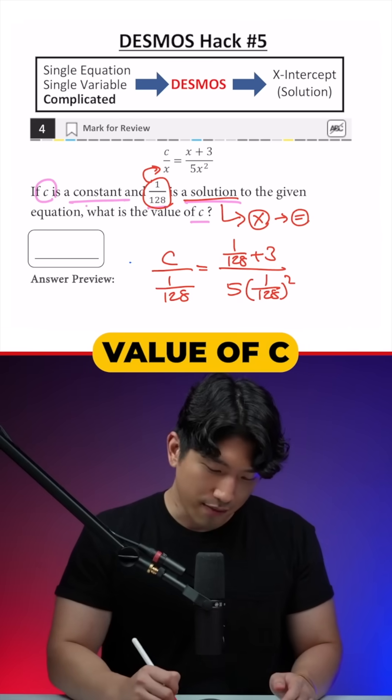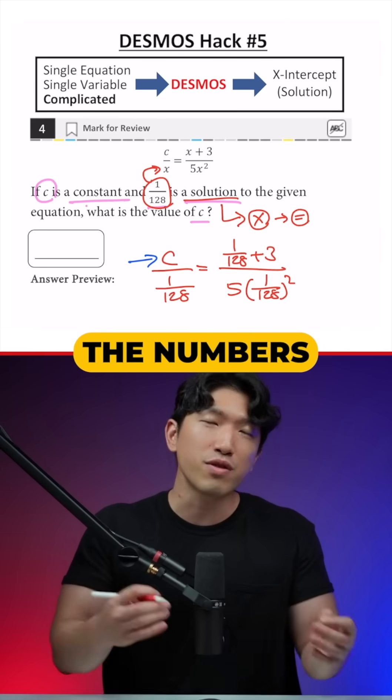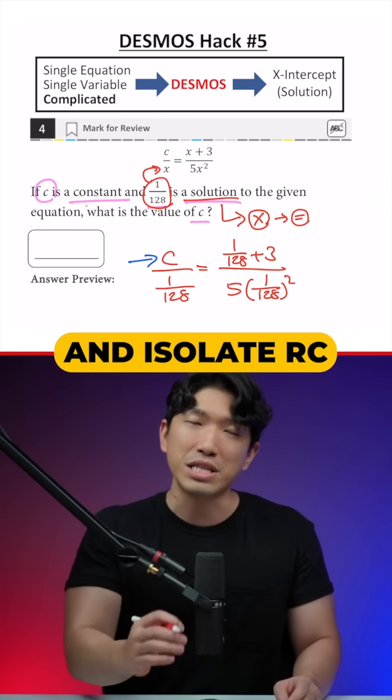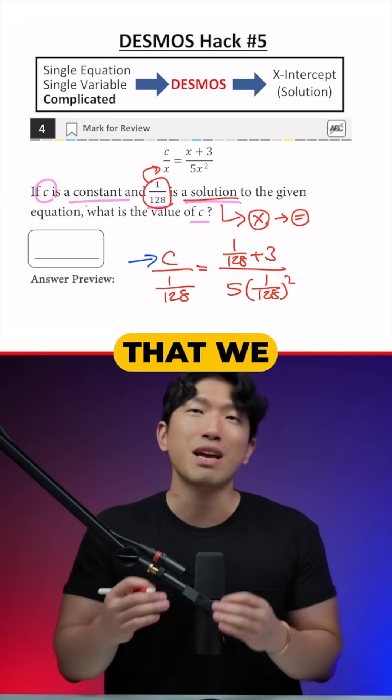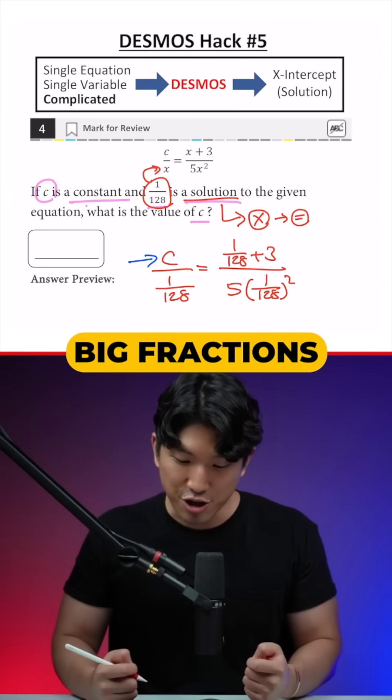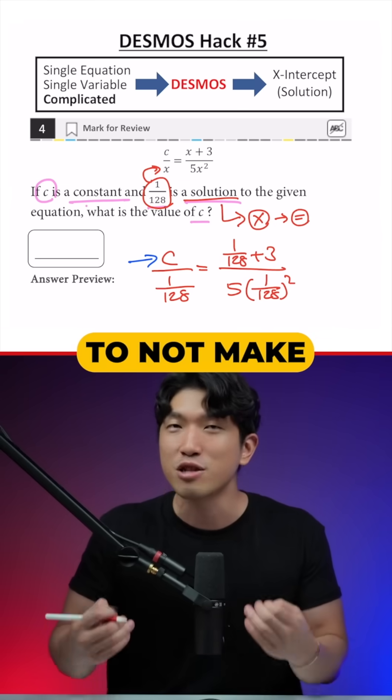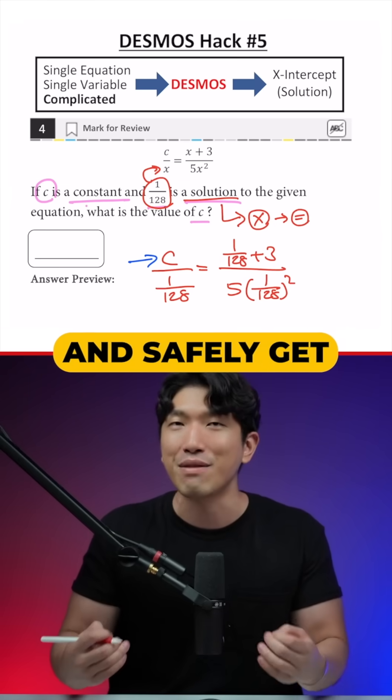And from here to find the value of C, all we have to do is just move the numbers around, simplify them and isolate our C. But the only problem is that we're working with nasty big fractions and we're going to have to try our best to not make any mistakes and safely get to the answer.